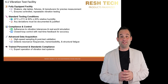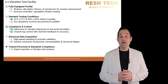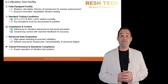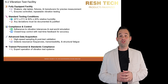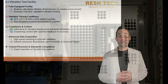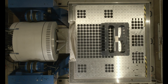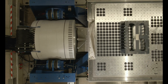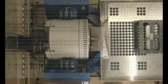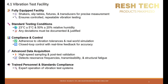First, let's talk about test facility. Your test facility should include a vibration shaker, sensor, a slip table, fixtures, and transducers for measurement and data recording. The testing should be performed under standard ambient conditions, unless specified otherwise. In addition, the facility must ensure compliance with vibration tolerances and control strategies. This guarantees accurate simulation of real-world conditions.